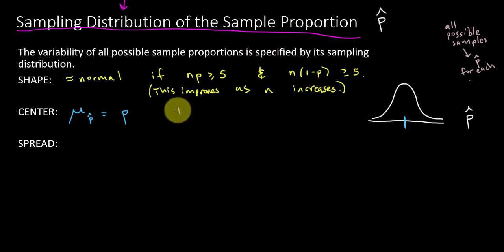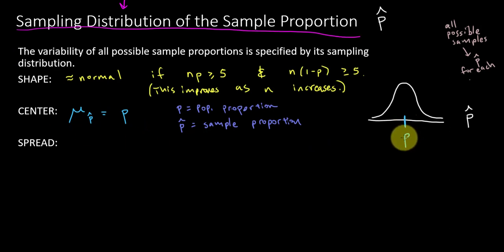And just to distinguish here, P with a hat is the sample proportion. So remember when we did in the previous video, we said the mean of the sample means is the population mean. That's exactly what we're saying here except as applied to proportions. I will put the letter P here.